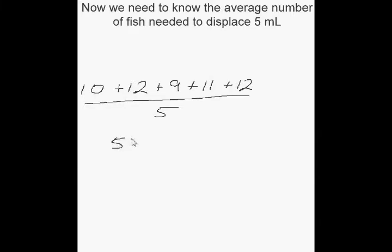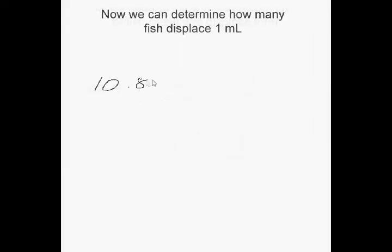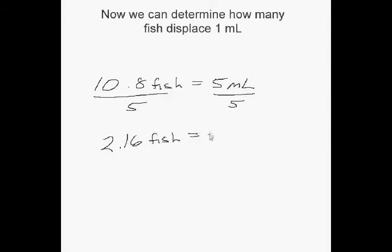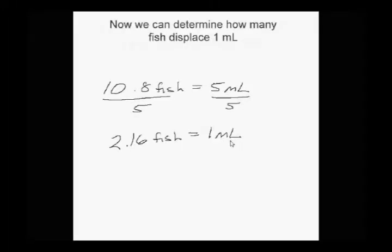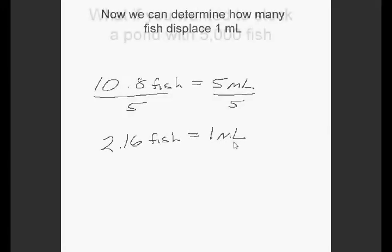The number of fish in our samples adds up to 54. We have 5 total samples. 54 divided by 5 is 10.8. We have now determined that it takes 10.8 of our fish to displace 5 milliliters. Next, we calculate how many of our fish will displace 1 milliliter. We do this by dividing our 10.8 fish in 5 milliliters by 5. We now know that it takes 2.16 of our fish to displace 1 milliliter.